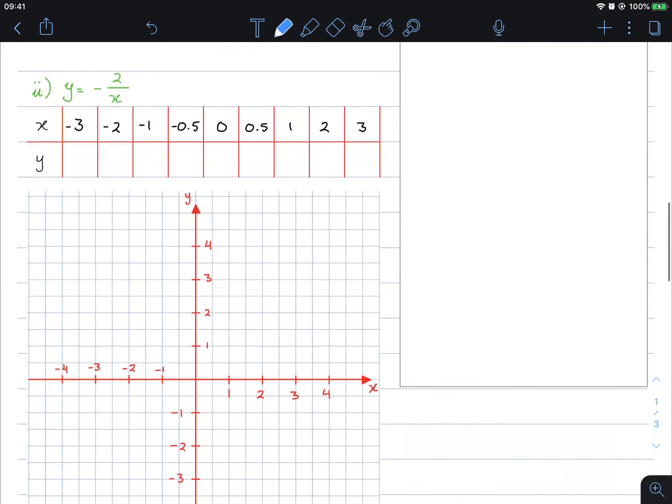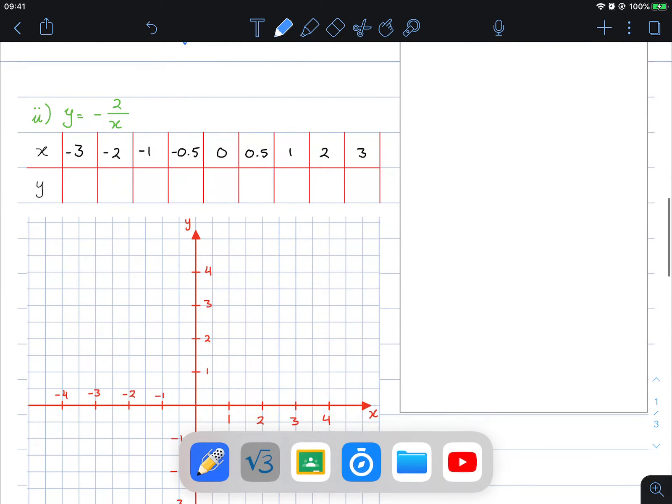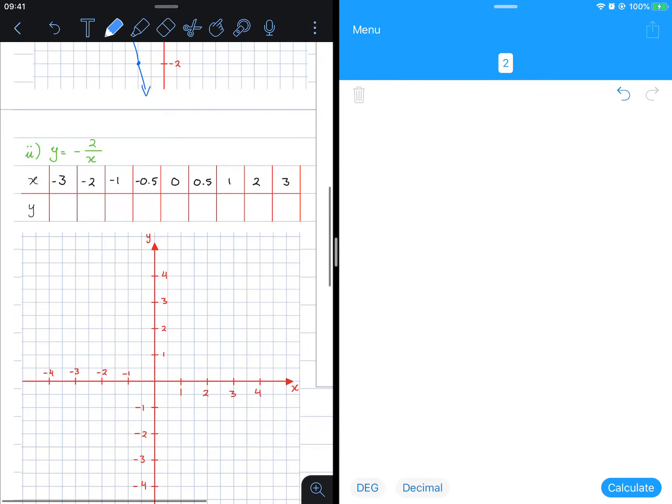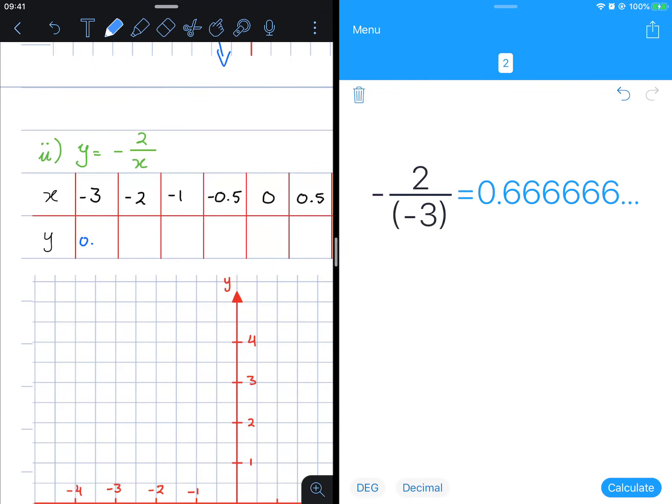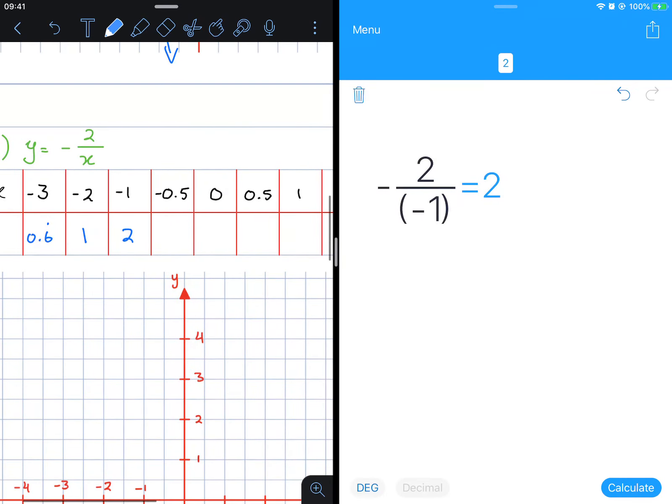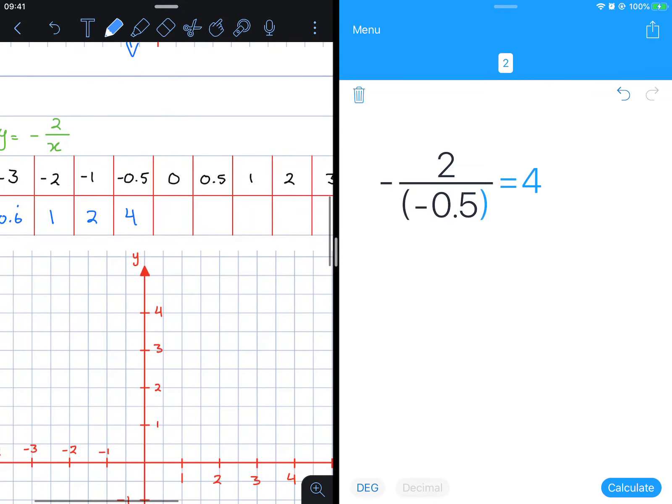Let's do another example. In this case we're a lot faster now. Negative 2 over negative 3, we get 0.6 recurring. Substituting negative 2, we get positive 1. Substituting negative 1, we get positive 2. Substituting 0.5, we get positive 4.